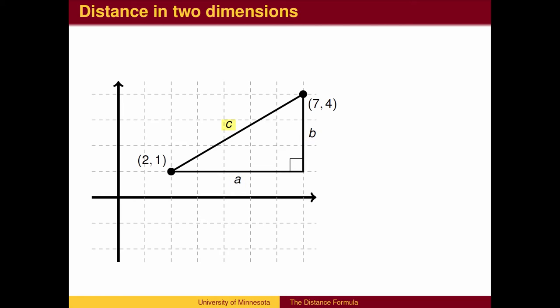The distance we are looking for, the distance between (2,1) and (7,4), is the hypotenuse of a right triangle.